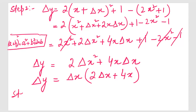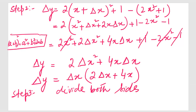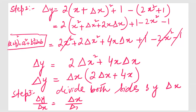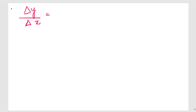Now step three: divide both sides of the equation by Δx. So Δy/Δx = Δx(2Δx + 4x)/Δx. The Δx in the numerator and denominator cancel, leaving Δy/Δx = 2Δx + 4x.